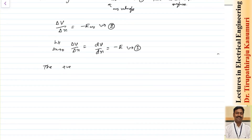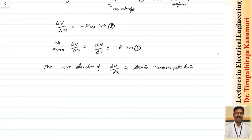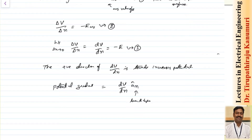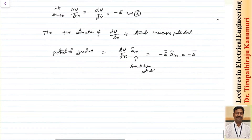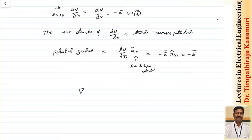The positive direction of dV by dN is towards increasing potential. This quantity is called the potential gradient of V, which is a vector quantity. If A_n indicates the direction from lower potential to higher potential, then the potential gradient equals dV by dN in the direction of A_n, which equals minus E in the direction of A_n, or simply minus E since E is already a vector. So the potential gradient is generally defined as grad V equals minus E.